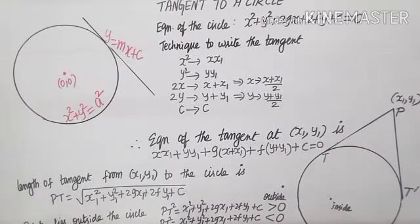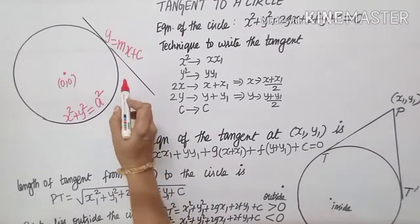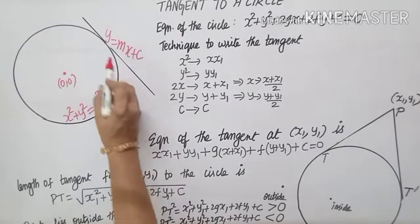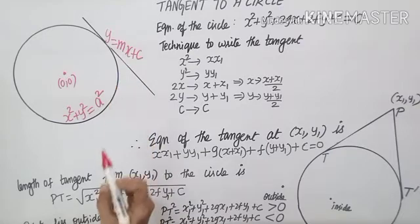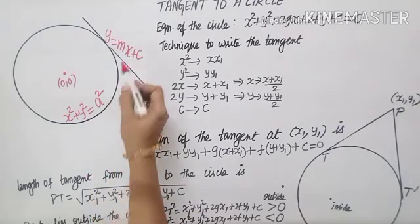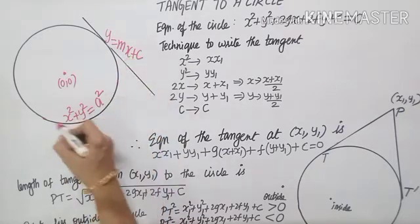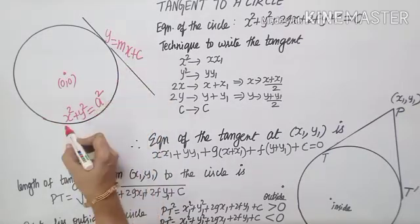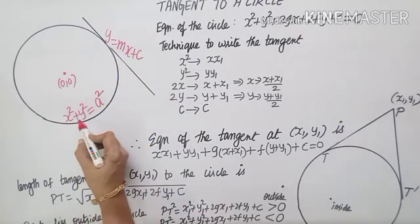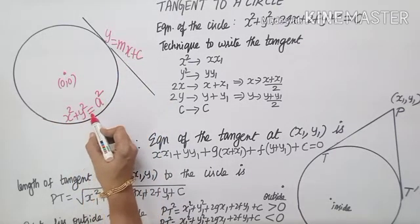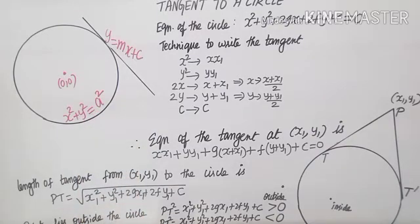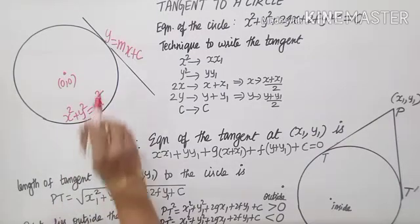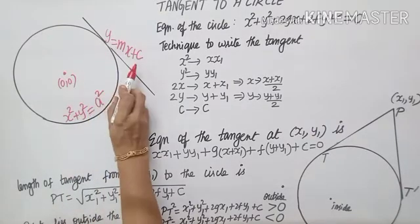Now we are going to learn a condition. For a line y = mx + c to be a tangent to the circle x² + y² = a²,